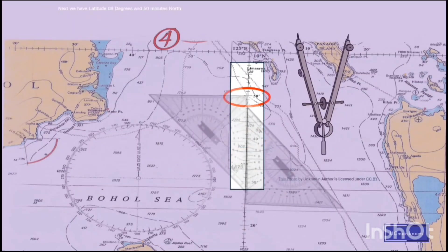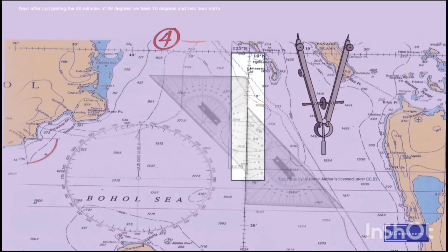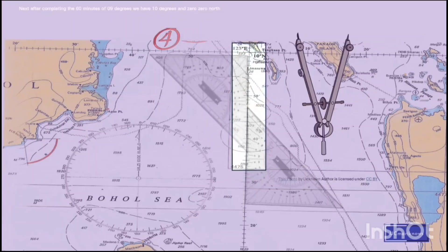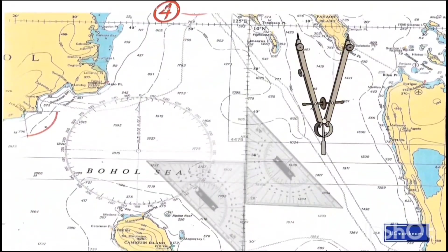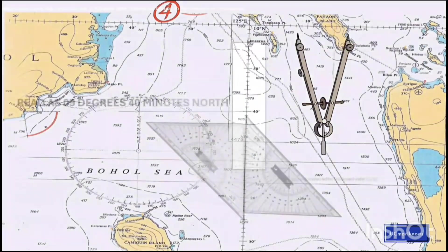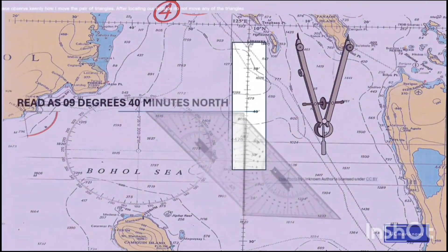Next we have latitude 9 degrees 50 minutes north, then after completing the 60 minutes of 9 degrees, we have 10 degrees 00 north. Please observe keenly how I move the pair of triangles.